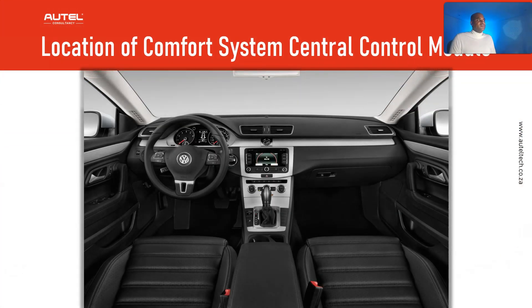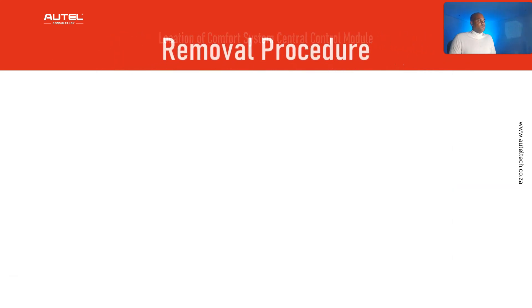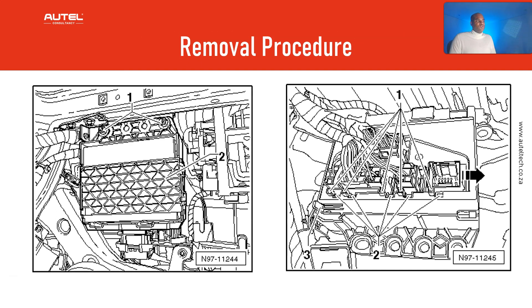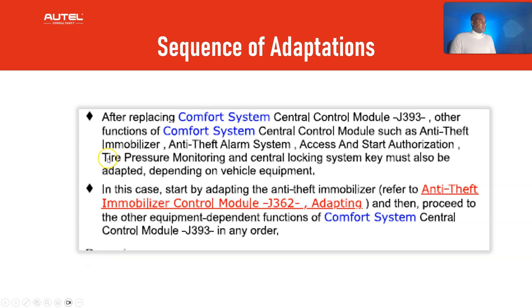You're going to find it in the passenger glove compartment. Make sure beforehand that all electrical systems are turned off and the ignition is also off. Once you've installed everything back into the vehicle, keep in mind there are other special functions linked to this module that need to be adapted — such as the tire pressure monitoring and central locking systems, depending on the vehicle equipment.